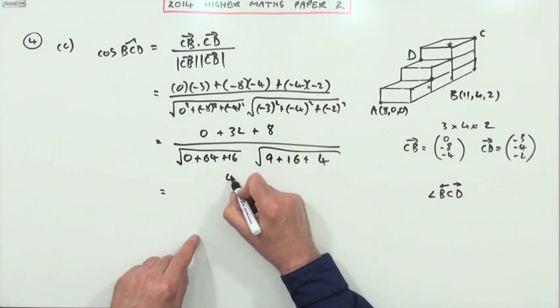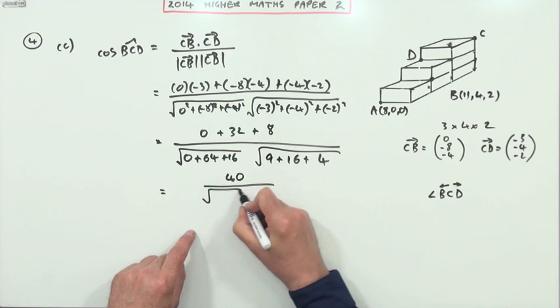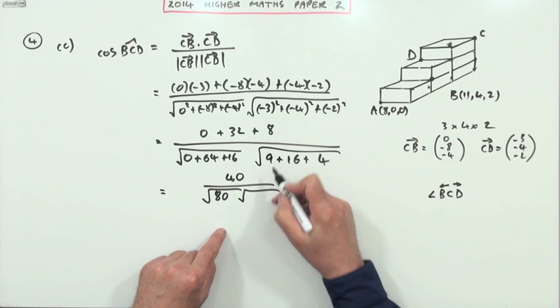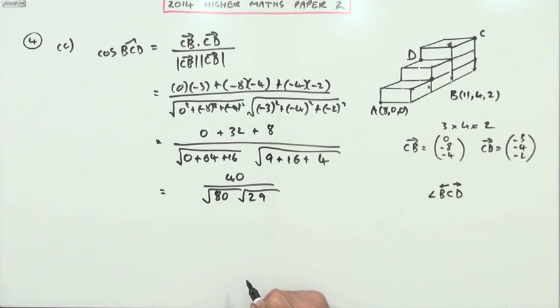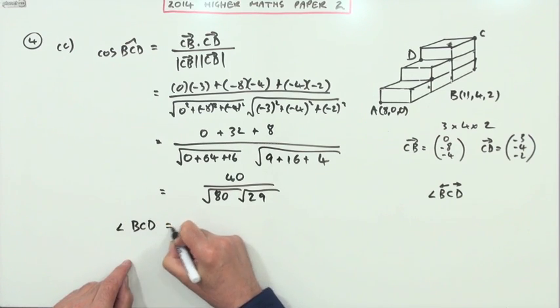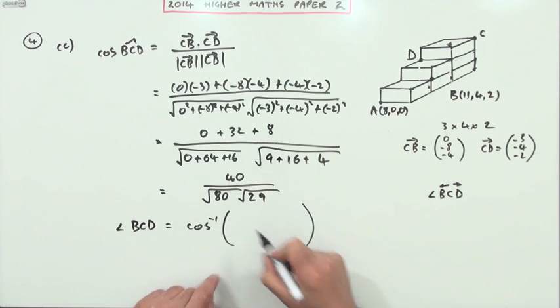So the top comes to 40. That's the square root of 64 and 16 is 80. That's the square root of 20 and 9 is 29.